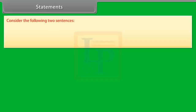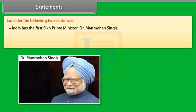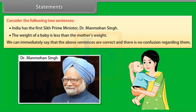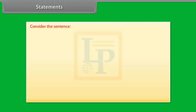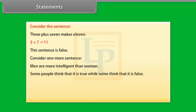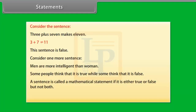Statements. Consider the sentence 'India has the first Sikh Prime Minister, Dr. Manmohan Singh' and 'The weight of a baby is less than the mother's weight.' We can immediately say these sentences are correct. The sentence 'Three plus seven makes eleven' is false. The sentence 'Men are more intelligent than women' — some people think it is true while some think it is false. A mathematical statement is a sentence that is either true or false, but not both.